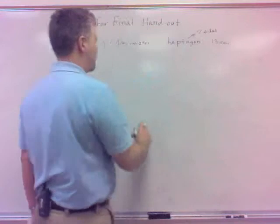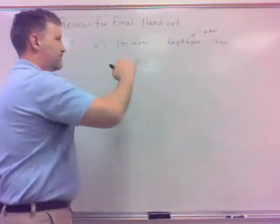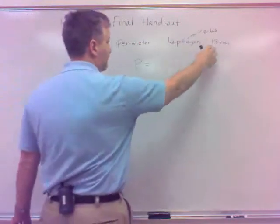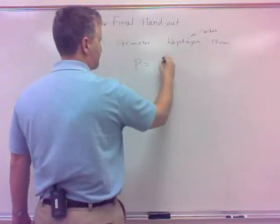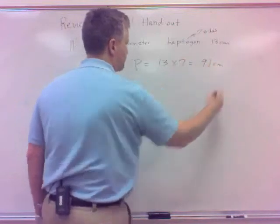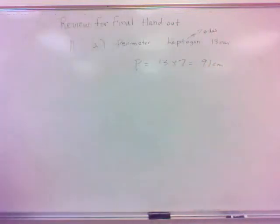So we've got 7 sides, so the perimeter is just the measure of every side. So it would be 13 times 7, 91. Ninety-one centimeters.